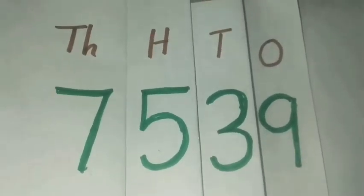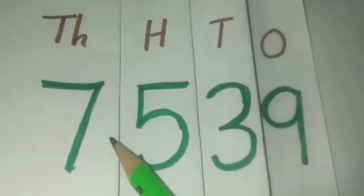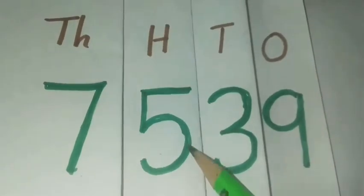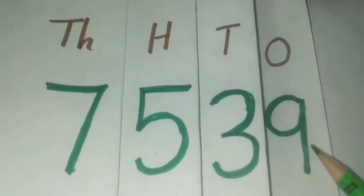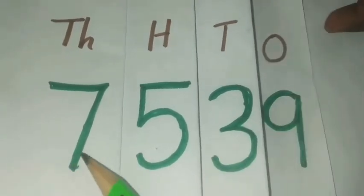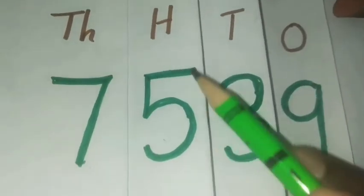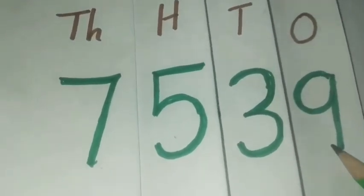See here is a number. It is a 4-digit number. How will you read this number? 7539. We must read the tens and ones place together. 7539. This is the number.